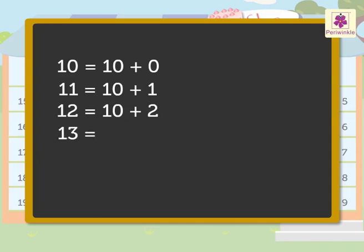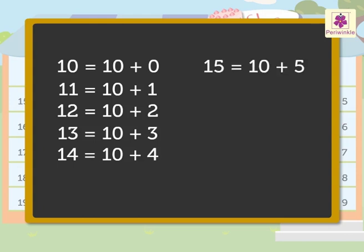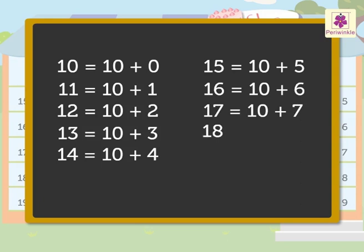Thirteen is equal to ten plus three. Fourteen is equal to ten plus four. Fifteen is equal to ten plus five. Sixteen is equal to ten plus six. Seventeen is equal to ten plus seven. Eighteen is equal to ten plus eight. Nineteen is equal to ten plus nine.